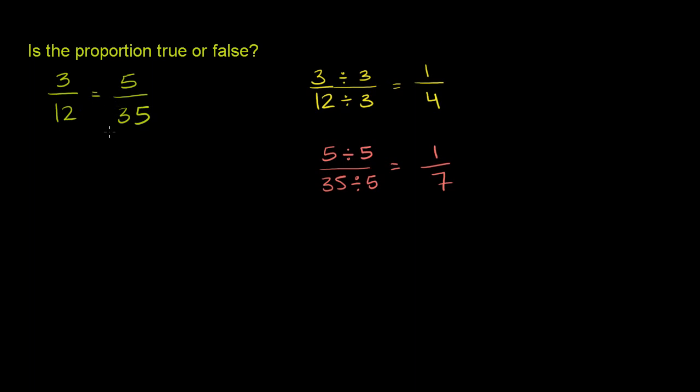So this is equivalent to saying that 1/4 is equal to 1/7, which is clearly not true. Therefore, the proportion is false.